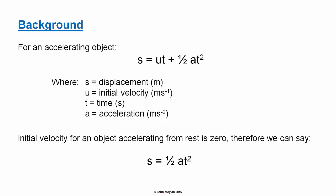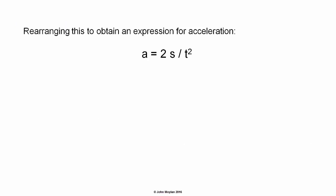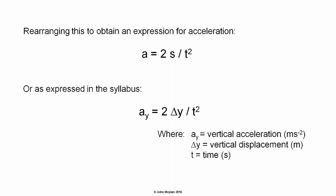We can rearrange this equation in terms of a, giving us a = 2 × displacement / time², or as expressed in the syllabus: a_y equals 2Δy divided by t², where a_y is acceleration in the y direction in meters per second squared, Δy is displacement in the y direction in meters, and t is time in seconds.